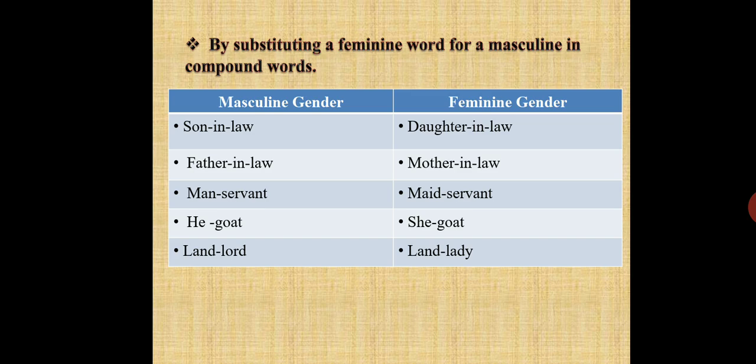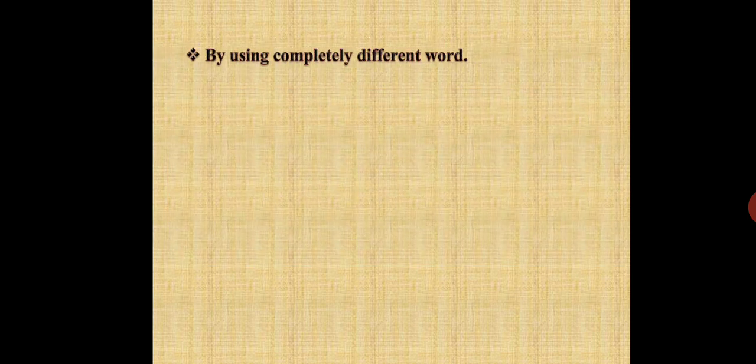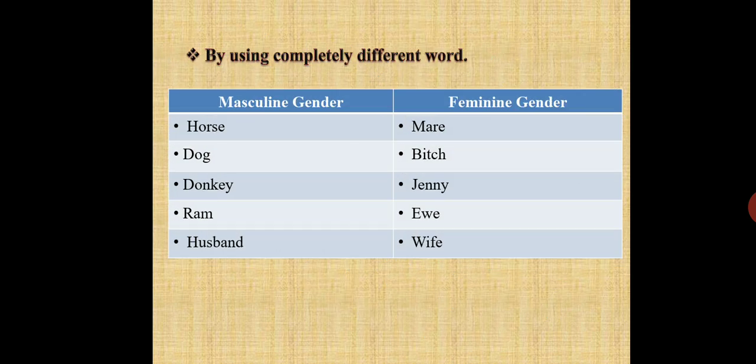Fourth rule: by using a completely different word. Masculine gender — horse, feminine gender — mare. Similarly, dog — bitch, donkey — jenny, ram — ewe, husband — wife.